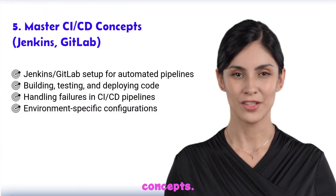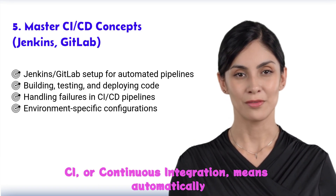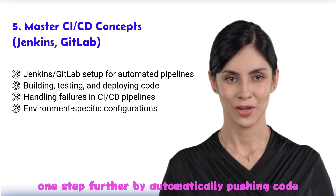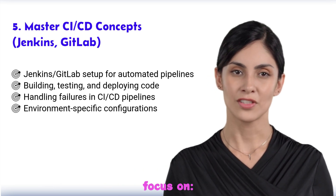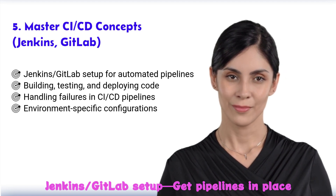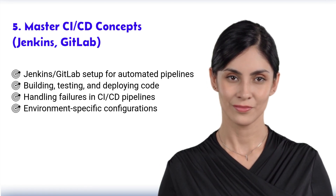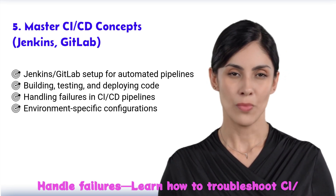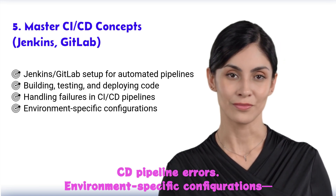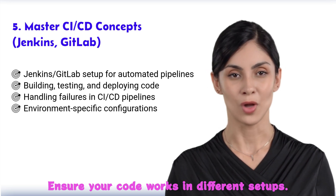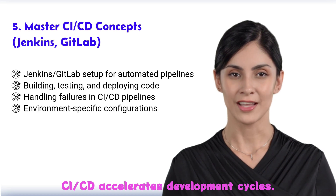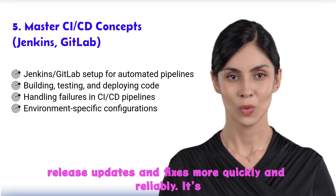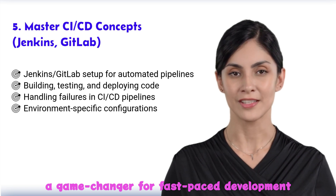Step 5: mastering CI/CD concepts. CI, or continuous integration, means automatically testing code. CD, or continuous deployment, takes it further by automatically pushing code to production. Set up Jenkins or GitLab pipelines to automate your processes. Automate the build, test, and deploy steps to speed up your workflow. Learn how to troubleshoot CI/CD pipeline errors and manage environment-specific configurations. CI/CD accelerates development cycles — with automated testing and deployments, you can release updates more quickly and reliably.